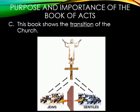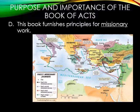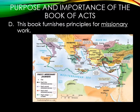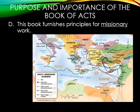Letter D: this book furnishes principles for missionary work. The spread of the Gospel in Acts was primarily done in groups. Examples include Peter and John in Acts 3, Paul and Barnabas in Acts 13, Barnabas and Mark in Acts 15, and Paul and Silas in Acts 16. The only exceptions were Philip to the Ethiopian eunuch, and Peter to Cornelius. I would like to point out that while this furnishes principles for missionary work, to them they weren't considering themselves missionaries — they honestly just considered it their Christian duty to spread the Gospel to the world.